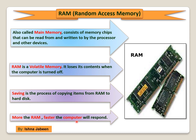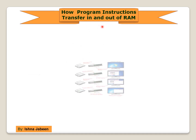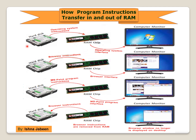RAM can accommodate multiple programs and applications simultaneously. How program instructions transfer in and out of RAM: Step one — when you start the computer, certain operating system files are loaded into RAM from the hard disk, and the operating system displays the user interface on the screen.